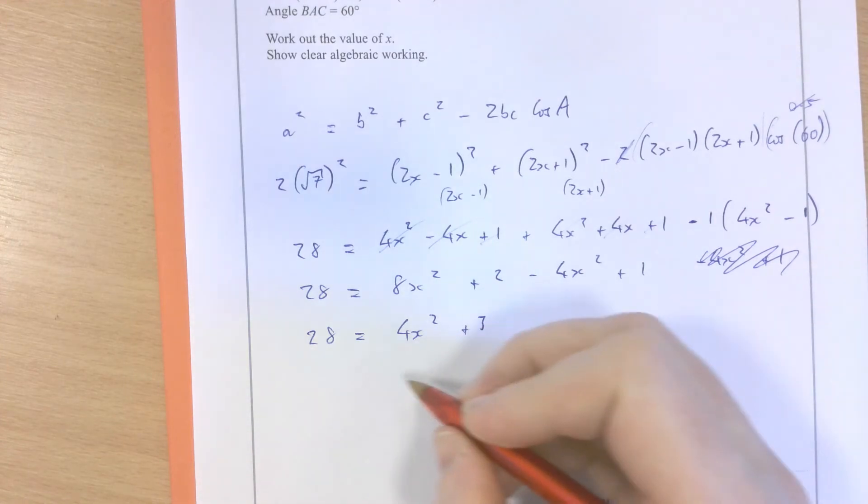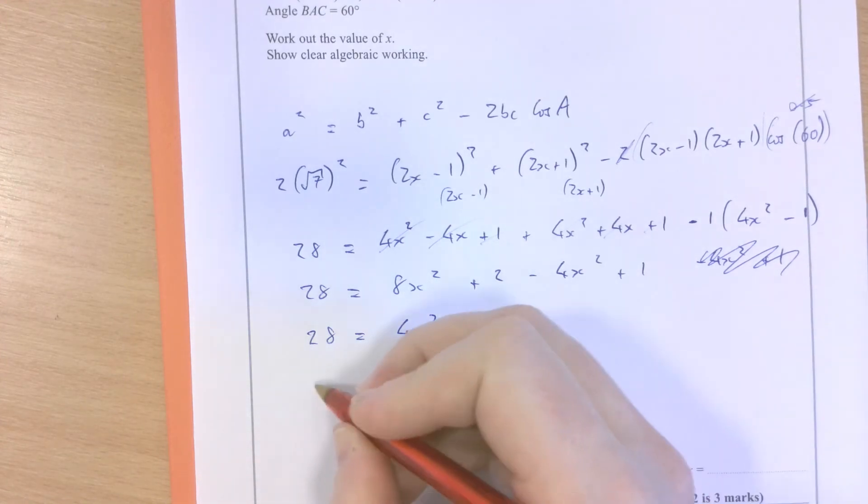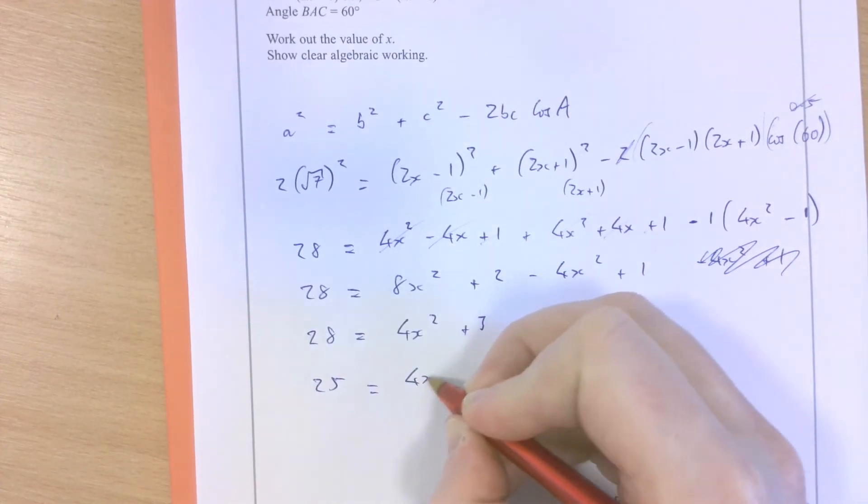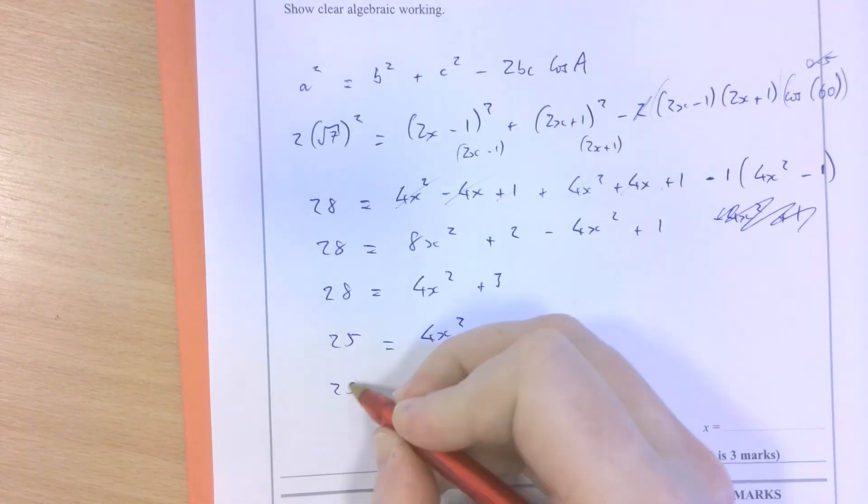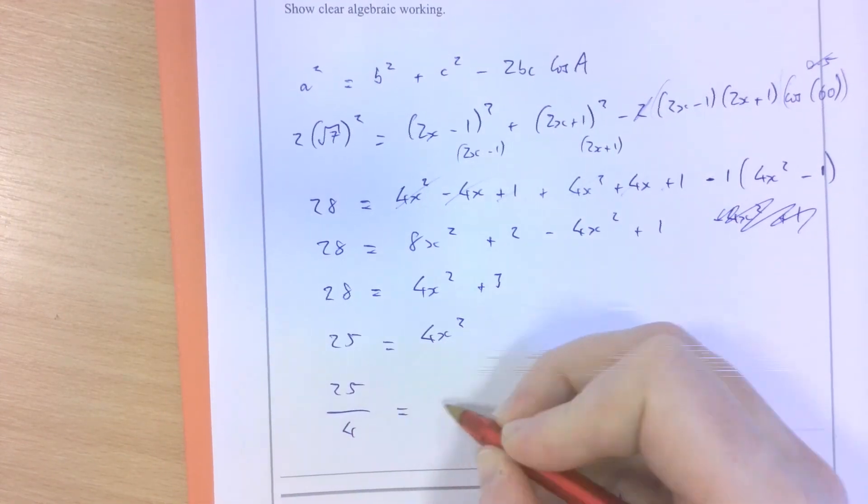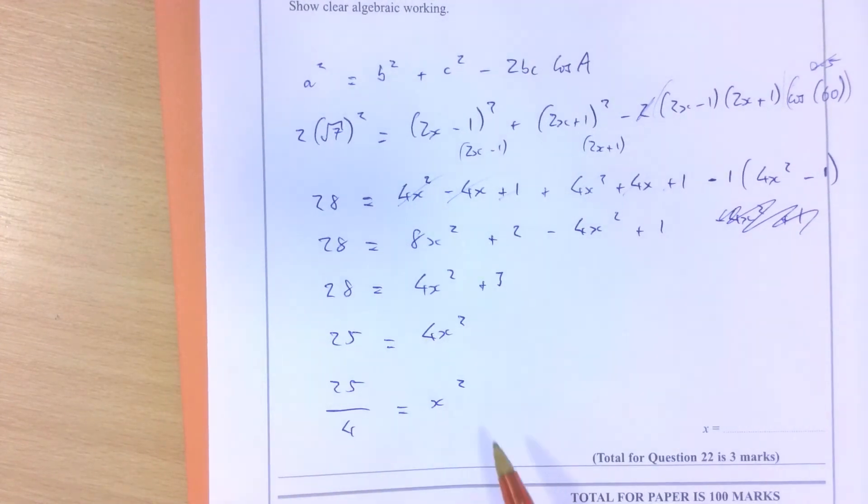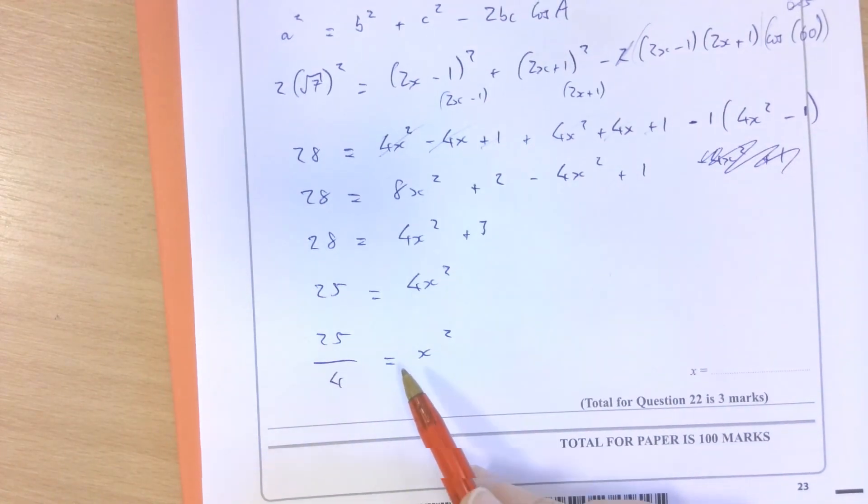Taking away 3 from both sides makes 25 equals 4x squared. Dividing both sides by 4, 25 divided by 4 equals x squared. And then square rooting both sides.